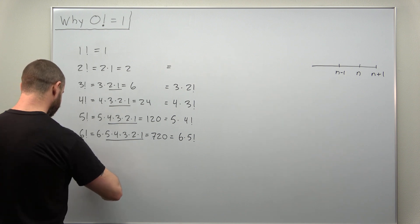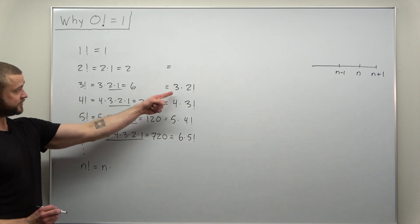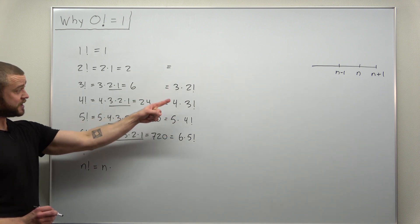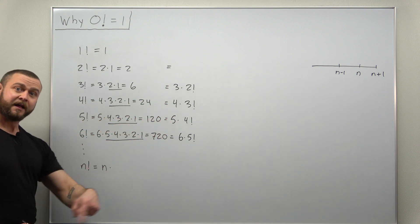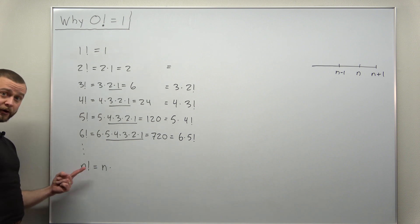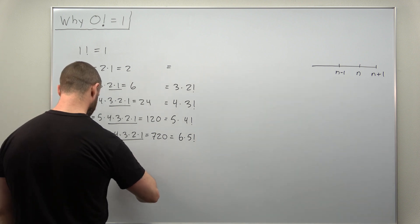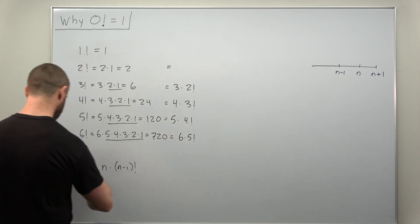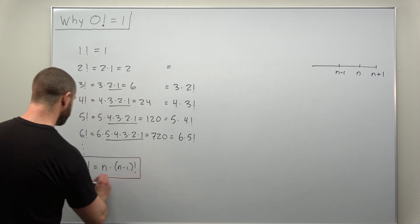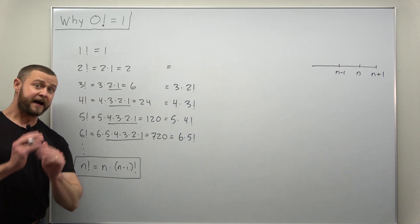We might write this as n factorial. It's n - that's these numbers in front: the three, four, five, and six - times the previous factorial. And before n factorial would have been n minus one factorial. This is arguably the most important property for the factorial function.